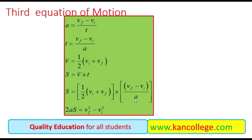In the denominator we have acceleration and 2. Moving 2a to the left by cross multiplication gives 2aS = (Vf + Vi)(Vf − Vi). The multiplication of these two terms gives Vf² − Vi². This concludes the proof. Thank you for watching, and please visit www.kerncollege.com for notes, video lectures, tests, quizzes, MCQs, and more.